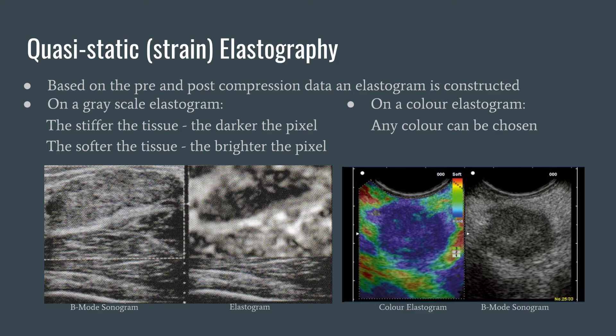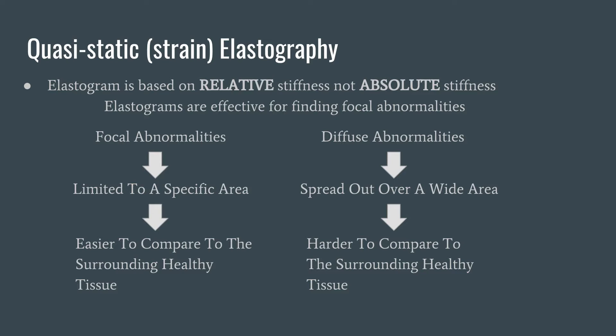The elastogram can be displayed side by side with the sonogram, and stiffer tissues will be darker and softer tissues will be brighter. It can also be a color image overlaid on top of our 2D image. You can use any color you want, but the default color for stiff tissues for most machines appears to be blue. Of course, this is all based on relative stiffness. If a lesion, which is very stiff, covers the entire elastogram, we wouldn't know any better — we would just think it's normal.